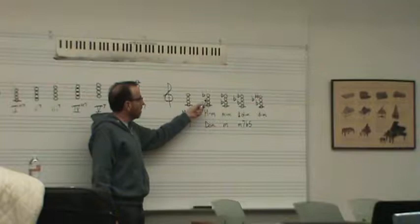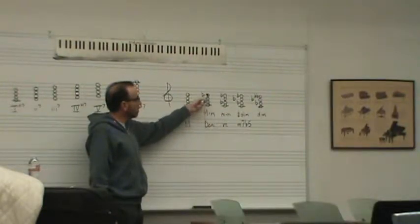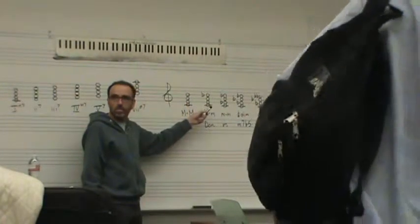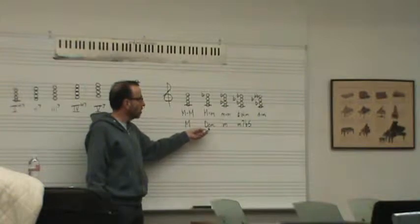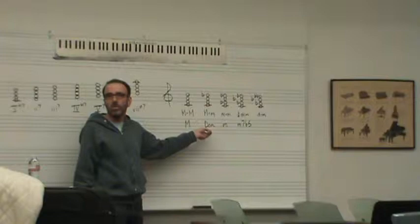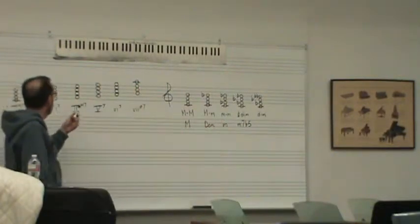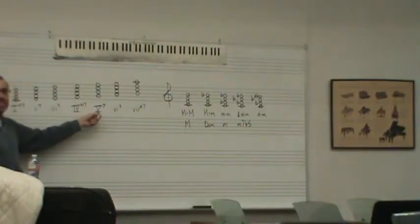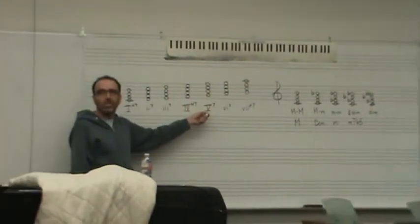Then there's the major-minor seventh chord — a major triad with a minor seventh, so from the root to the seventh is a minor seventh. In traditional harmony, we often call it a major-minor seventh, or the term dominant seventh, which is used a lot in commercial harmony and also in traditional harmony. That's the chord you end up with on the dominant scale degree of the root, which is why it's called the dominant seventh chord.